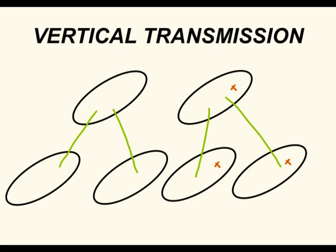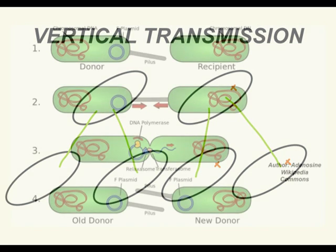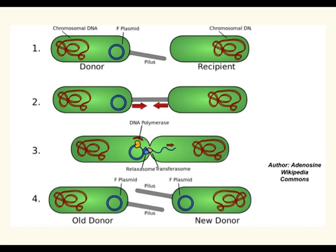The mutation can be transmitted vertically from generation to generation. But also by conjugation, it can be transmitted horizontally within a generation.